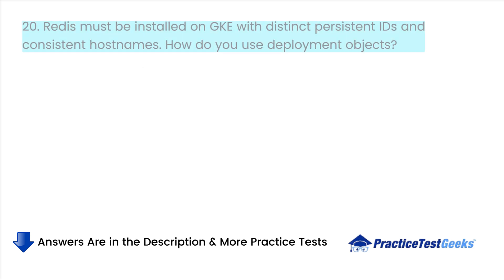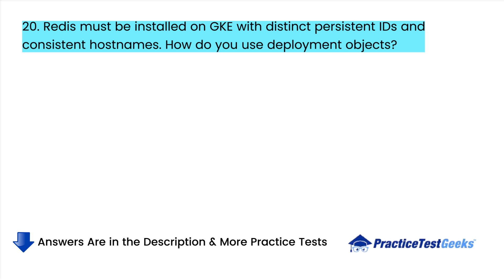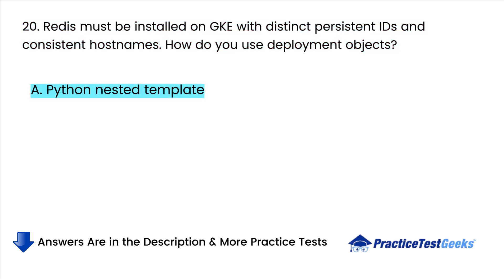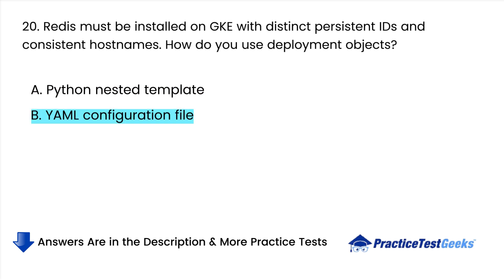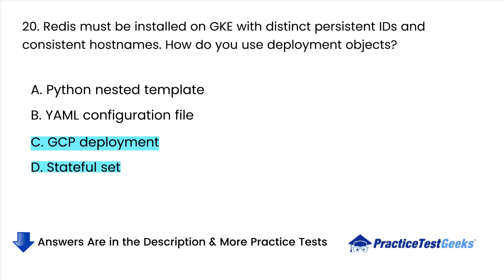Redis must be installed on GKE with distinct persistent IDs and consistent hostnames. How do you use deployment objects? A. Python nested template. B. YAML configuration file. C. GCP deployment. D. Stateful set.